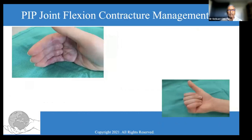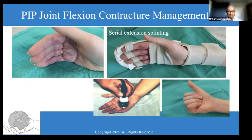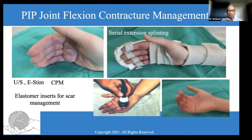Regarding PIP joint flexion contractures, we should monitor to prevent them, but some patients are heavy scar formers. Upon identifying a finger's tendency to go into flexion, we changed the dorsal blocking splint to serial extension splinting, then used ultrasound, electrical stimulation, CPM, and elastomer insoles for scar management, and could regain both finger extension and finger flexion, as you see in this case. The results are fascinating with early detection and early management.